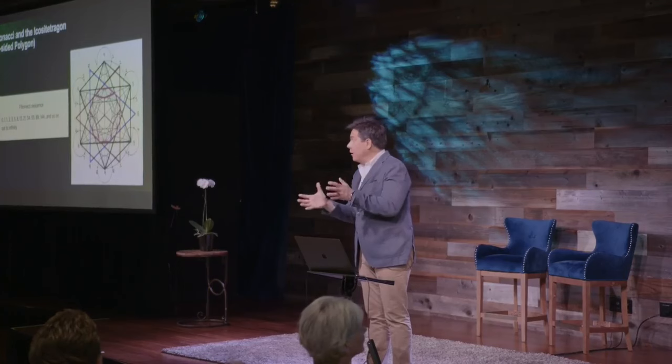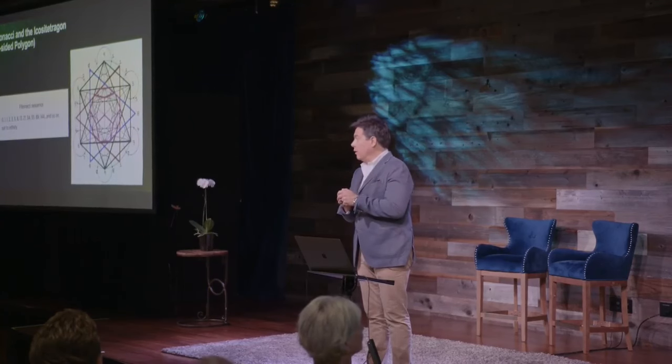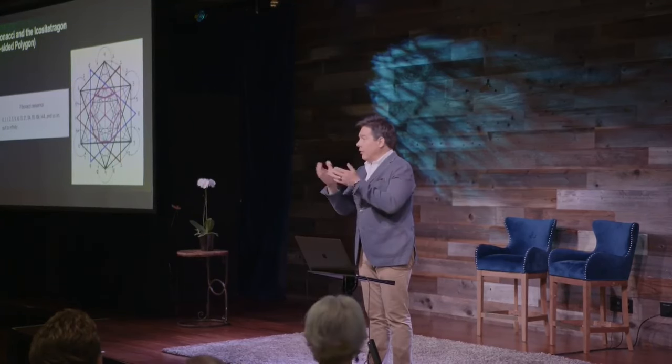So what's the sum of angles of a pentagon? 540 degrees. 5 plus 4 equals 9. What's the sum of angles for a hexagon? 720. 7 plus 2 equals 9.